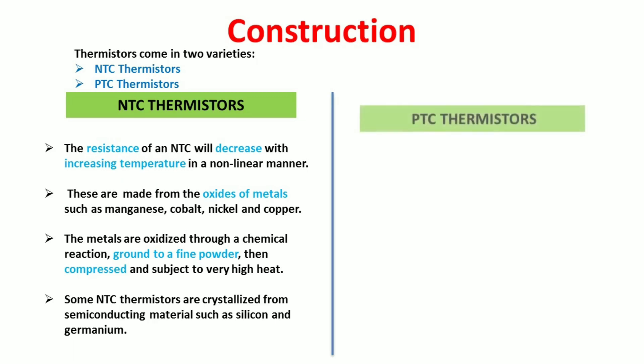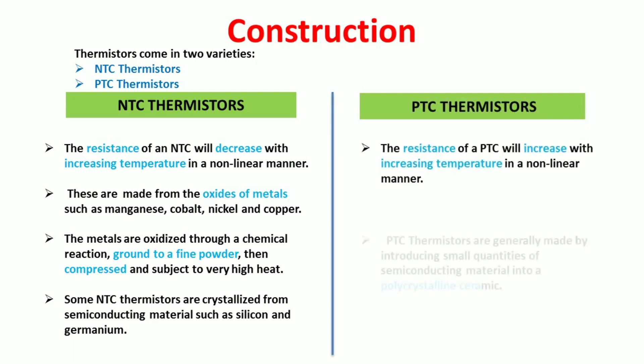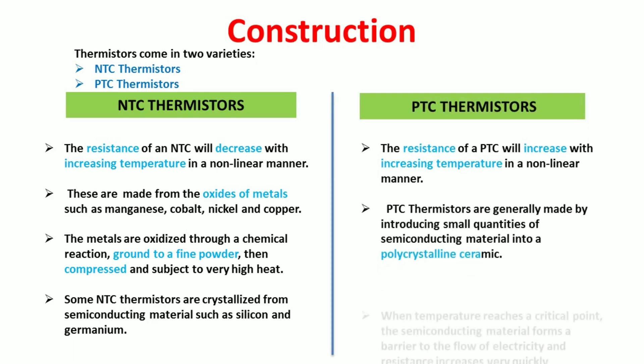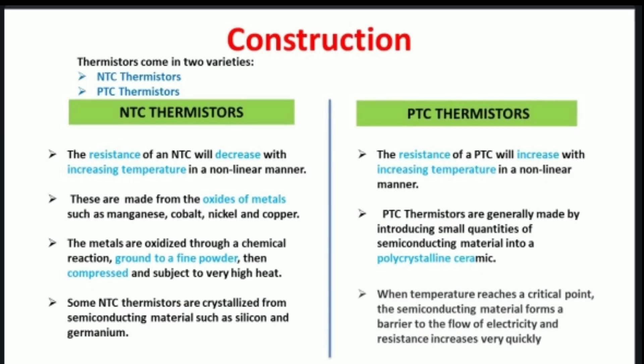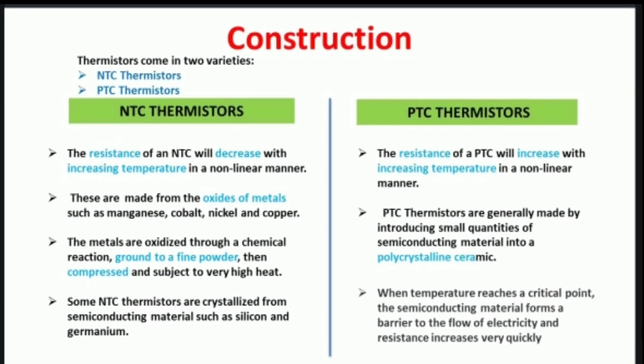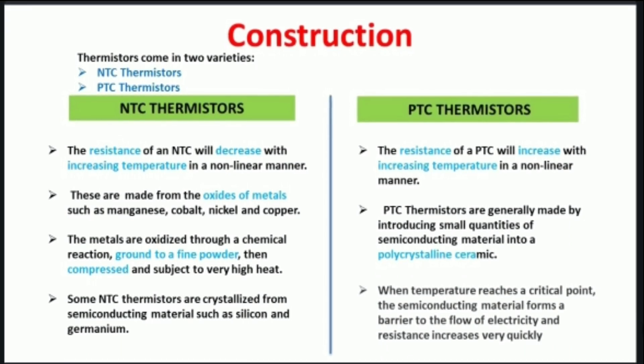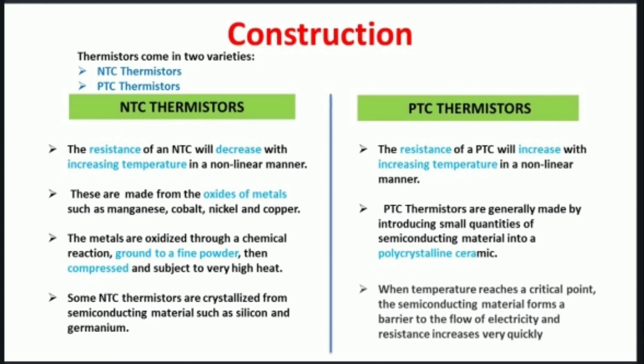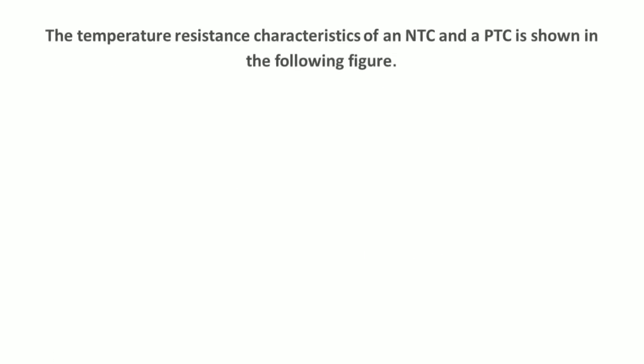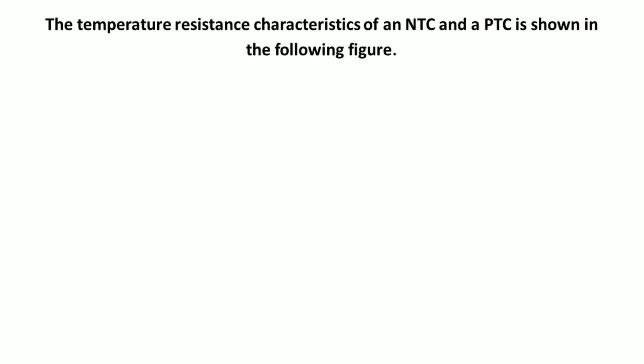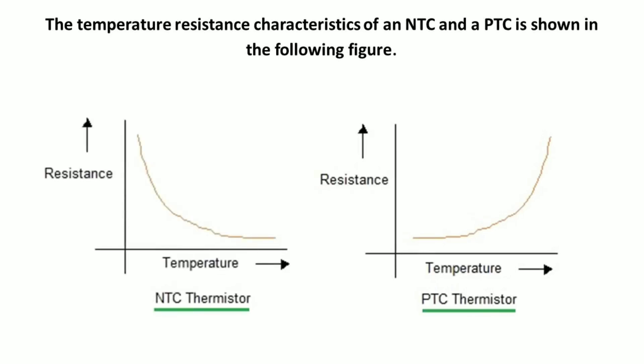In comparison to NTC, PTC thermistors are made by introducing small quantity of semiconductor material into a polycrystalline ceramic. When temperature reaches a critical point, the semiconducting material forms a barrier to the flow of electricity and resistance increases very quickly. In PTC, resistance will increase with increasing temperature. Here we can see the temperature resistance characteristics of both NTC and PTC thermistor. It is clear from the graph that in NTC, if we increase the temperature the resistance decreases, and for PTC the resistance increases on increasing temperature.